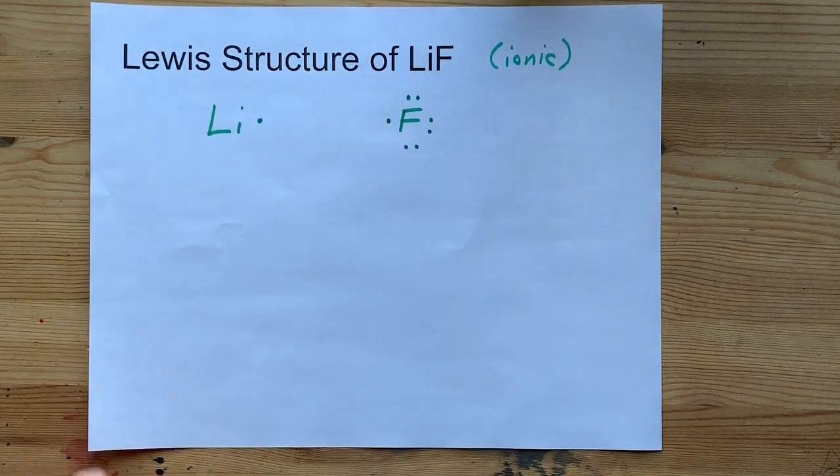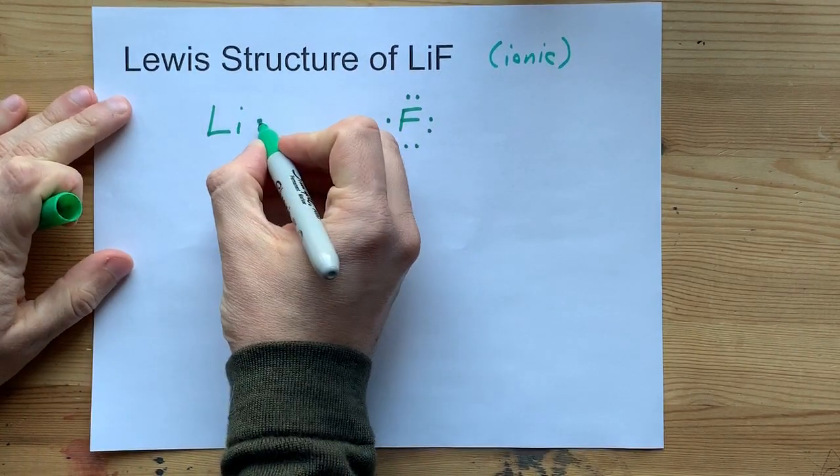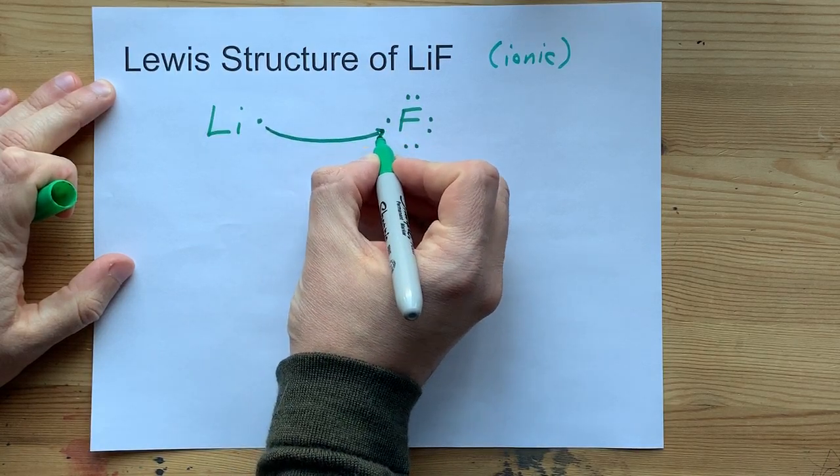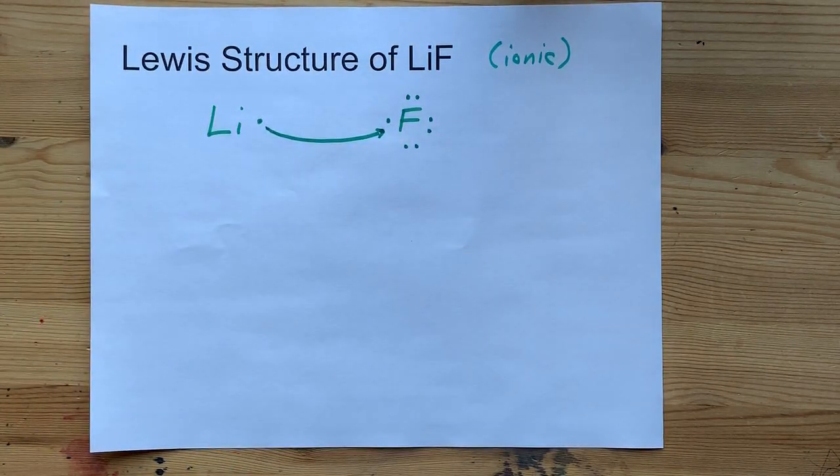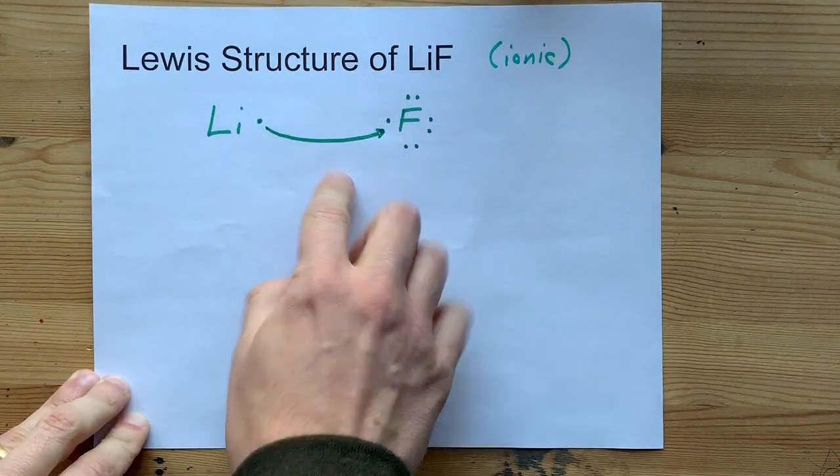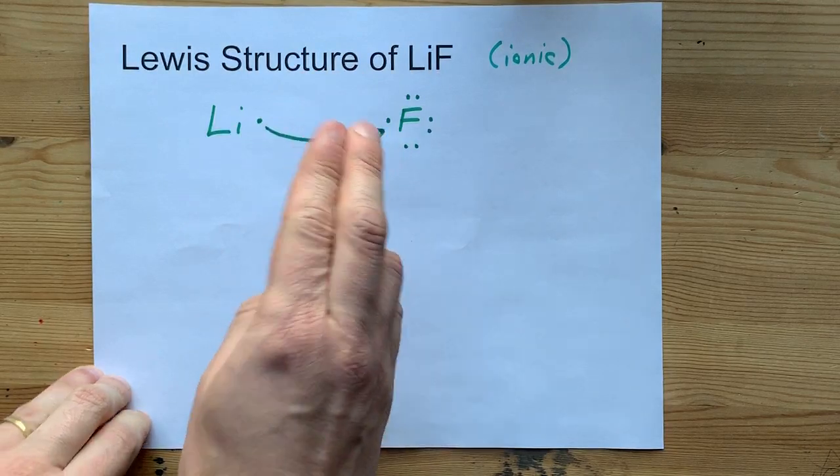The way that we show that in Lewis structures is to draw a physical arrow from that electron to where it goes. It will complete the pair on this fluorine. So what we have here is just showing the transfer. This is not the real Lewis structure yet.